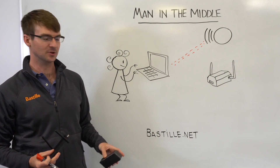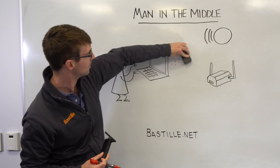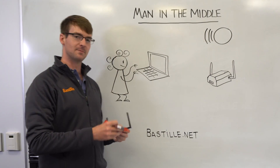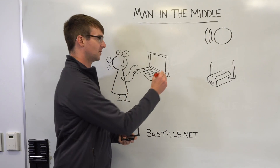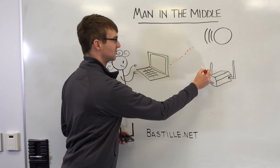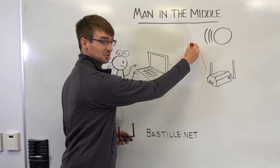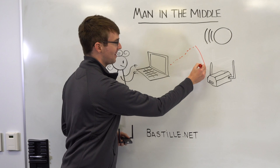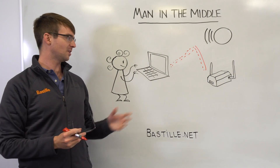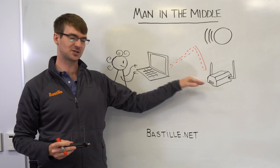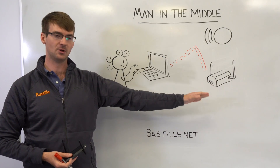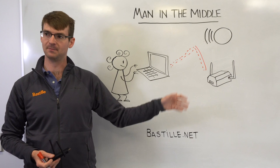Now say we have a malicious pineapple in the picture as well. The pineapple is a clever device. When it sees the request go out looking for the trusted AP, the pineapple steps in the middle and responds instead. So the client essentially routes all its connections through the pineapple, which is then able to man-in-the-middle all the traffic flowing to and from the client.